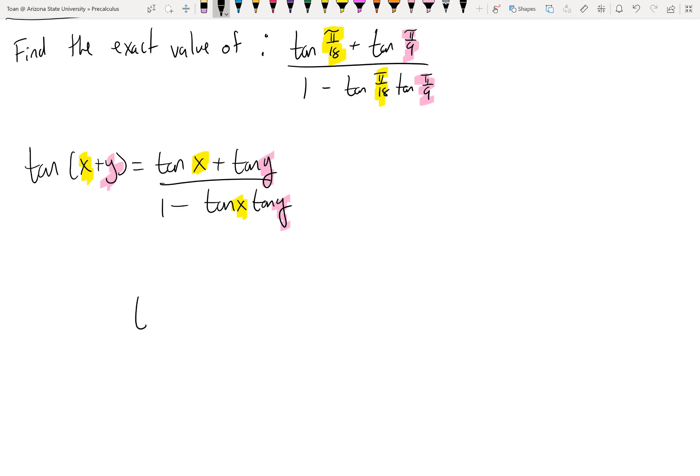So we know that tan pi over 18 plus tan pi over 9, I'm just rewriting the problem, over 1 minus tan pi over 18 tan pi over 9. That is simply tan, according to the pattern, of the two angles added together, pi over 18 plus pi over 9.